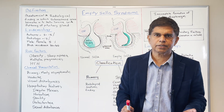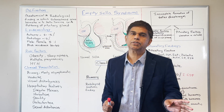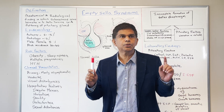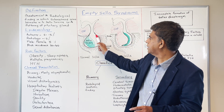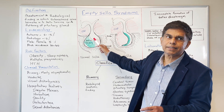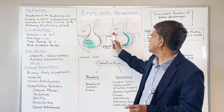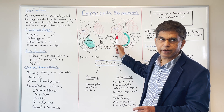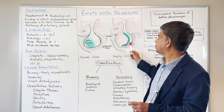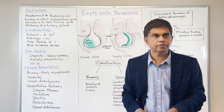Let's look at what the sella turcica is — it's a depression in the sphenoid bone at the base of the skull, and that's where the pituitary gland is situated. If you look at the pituitary gland, it sits in the sella turcica. Then you get this herniation of the subarachnoid space pushing it down, causing flattening of the pituitary gland.